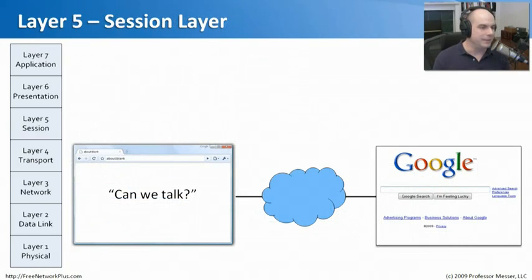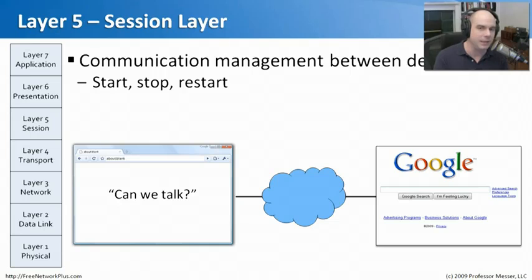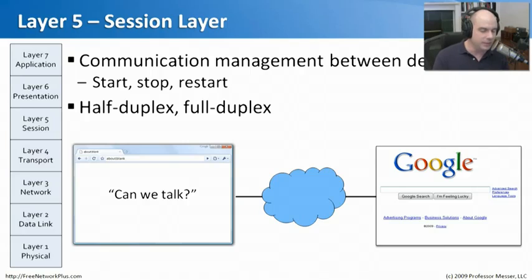Layer five of the OSI model is the session layer. Before you can begin a communication with Google, you first have to ask if it's okay to communicate — can I get a web page from you? One of the primary goals of this layer is to manage the communication between devices. It will start the communication, stop it, and restart that session if needed — which is obviously where the name 'session layer' comes from. It's also at this layer we see half-duplex and full-duplex connections, and handling simultaneous traffic from both devices.